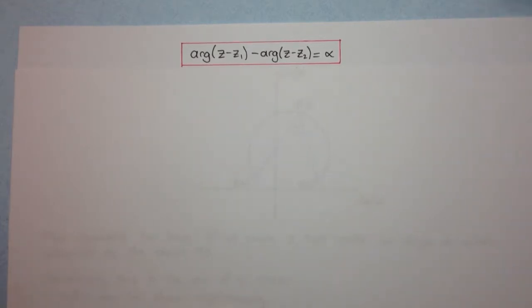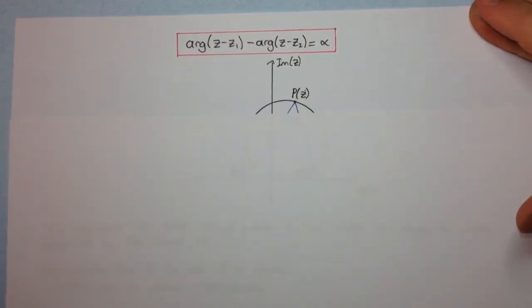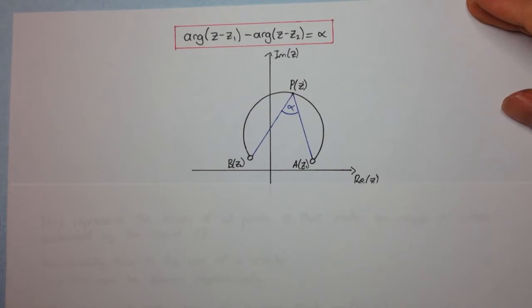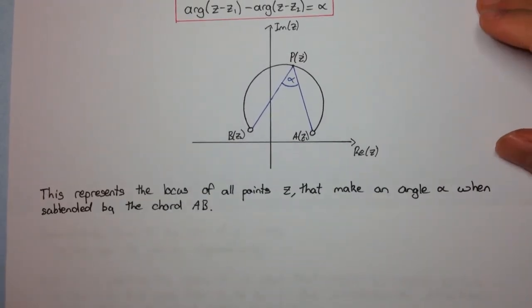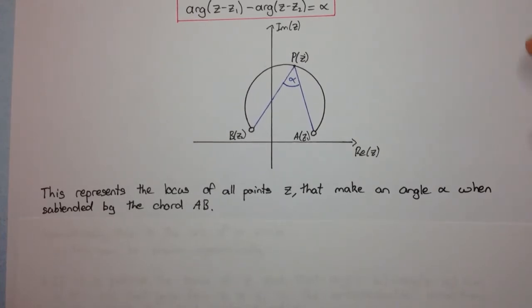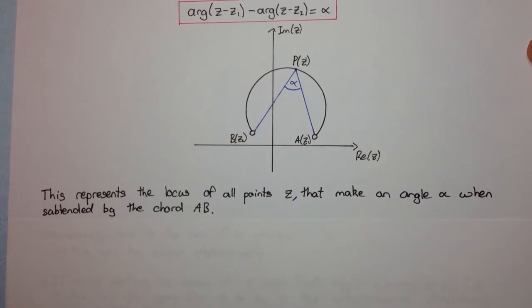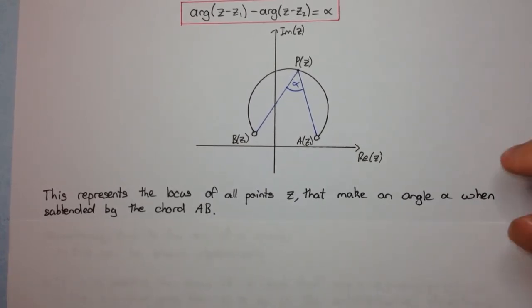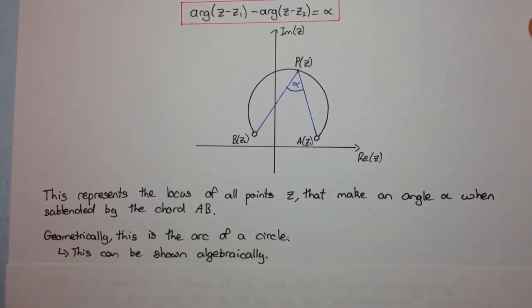So here we have that the arg of z minus z₁ minus the arg of z minus z₂ is α. Now I've drawn a diagram here, and let's have a look at what this means in words. So this represents the locus of all points z that make an angle α when subtended by the chord AB. Now when you hear this, you should think back to your circle geometry.